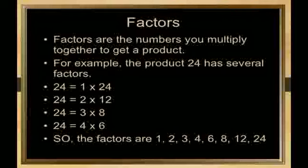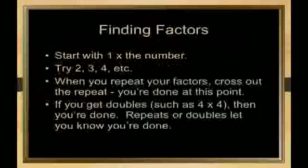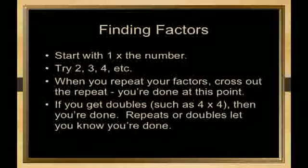This shows that the factor of any number starts with 1 and ends on that particular number. Finding factors: start with 1 times the number, try 2, 3, 4, and so on. As first we multiplied by 1 the number, and then on the second row we have to multiply 2 by some other number. In this way we get the factors of any number.